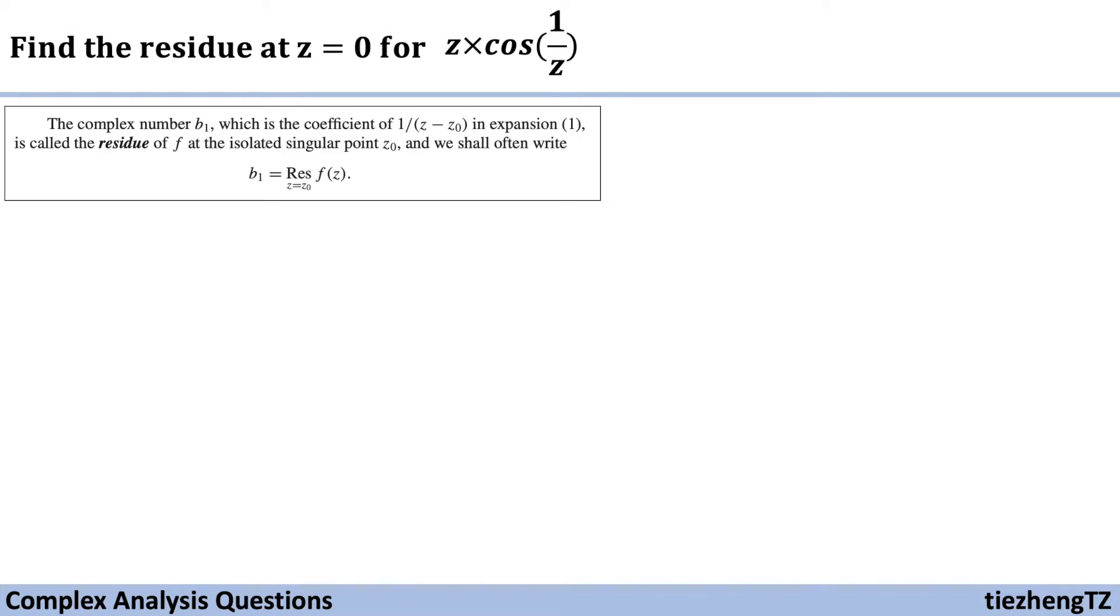So in our question for the function z times cosine 1 over z, we know that isolated singular point is when z equals 0. And this is actually given in the question at z equals 0. And when we see the cosine, we know we are going to use this expansion form to expand cosine z. So we just need to replace z with 1 over z.